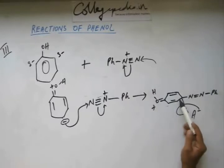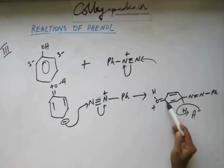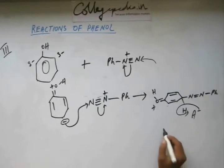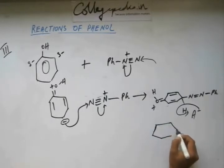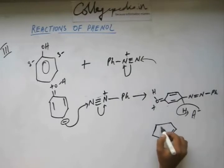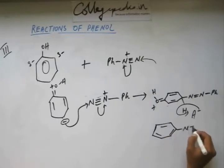When you start to do resonance, pi bond will come here, negative charge will come here. Again a pi bond will come here, negative charge will come here. The positive charge already on oxygen will neutralize the oxygen and we will have a structure like this.